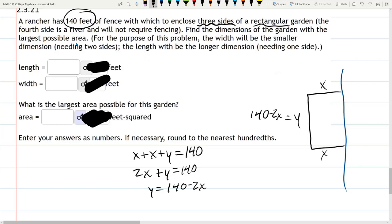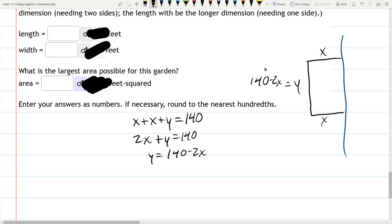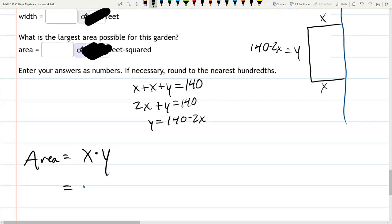All right, largest possible area. How in the world do we find the area? Well, the good news is the formula is pretty easy. It's length times width or width times height. In our case, X times Y. So for us, Y was 140 minus 2X.